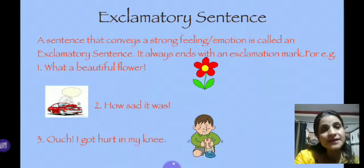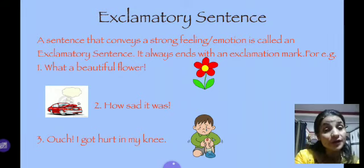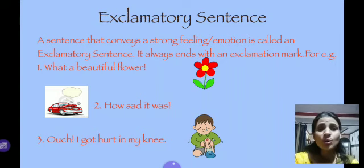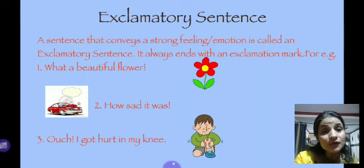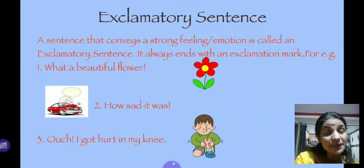Next category is the exclamatory sentence. A sentence that conveys a feeling, expression, or emotion — that kind of sentence is called an exclamatory sentence. You love to enjoy because you are full of expression. You say: 'Wow!', 'Yippee!', 'Ouch!', 'Ah!', 'Oh!', 'Hey!' These all expressions show your feelings and emotions, so they are all exclamatory words. Examples of exclamatory sentences: 'What a beautiful flower!' 'How sad it was!' 'Ouch! I got hurt in my knee!' At the end of an exclamatory sentence, we use an exclamation mark.